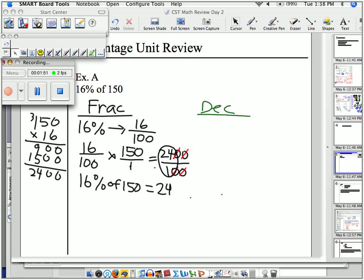In green ink, solving this by decimal method, I take 16 per cent. Rather than changing it to a fraction, here it is as a decimal. And then I take 0.16. 16 per cent of 150. And here's me solving that problem.